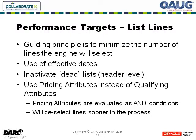One of the biggest benefits when looking at list lines is to consider using pricing attributes instead of qualifying attributes. Pricing attributes are evaluated as AND conditions, and it's not uncommon to see qualifying attributes set up as multiple AND conditions — if this and this and this condition is met. Those can be easily modeled as pricing attributes. The benefit is that attributes defined at the line level as pricing attributes will deselect the line sooner, so you can see a significant reduction in the number of lines the engine selects.